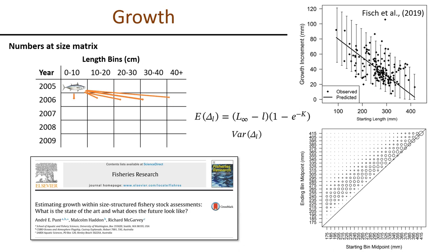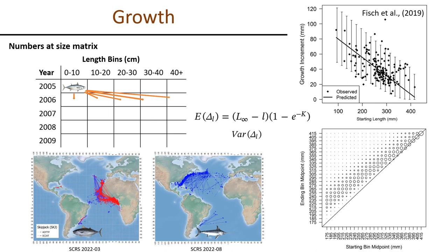The first major difference between a size and an age-structured model is transition through the abundance matrix. We no longer take convenient use of the fact that a fish aged 1 in year 1 has to be aged 2 in year 2 — now we're transitioning according to a growth transition matrix. What's often done in size-structured assessments is to include additional information on growth, which often comes in the form of growth increments from tagging: a starting length, a growth increment, and time at liberty, integrated into the assessment.